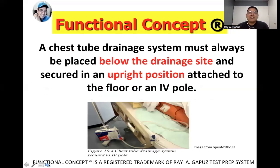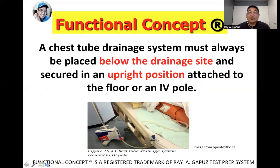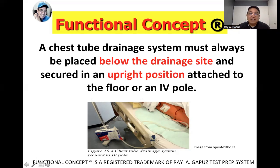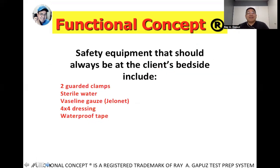A chest tube drainage system using the thoracic catheter must always be placed below the drainage site and secured in an upright position, attached to the floor of an IV pole. Since it is designed to drain both air and fluid, it must be kept below chest level.